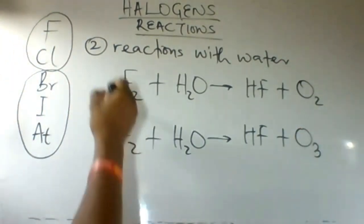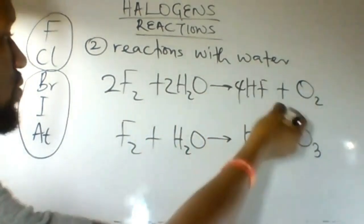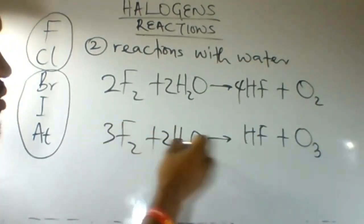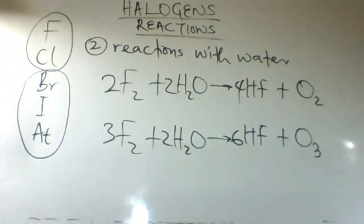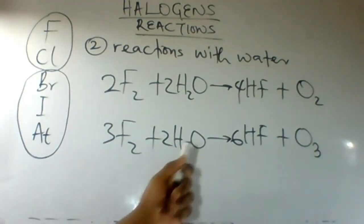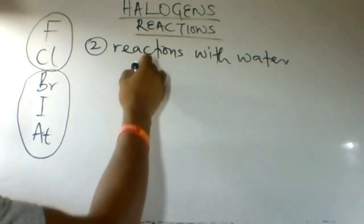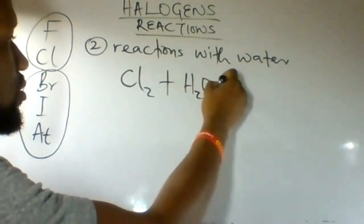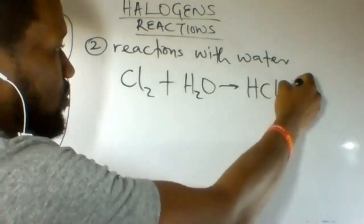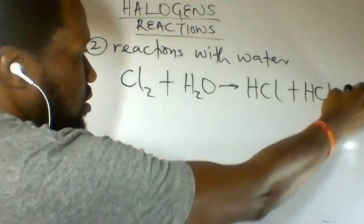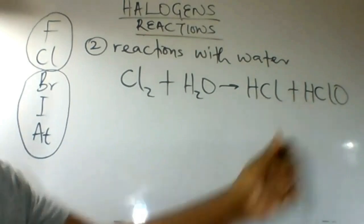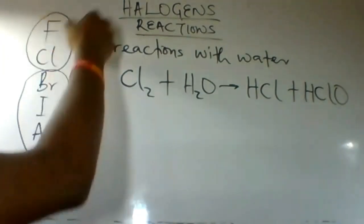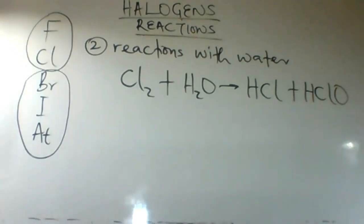If we balance the fluorine-water reaction forming ozone, we get coefficients 2, 2, and 4 for one form, or 3, 2, and 6 for the ozone form. When fluorine combines with water it forms oxygen and ozone. Chlorine can do the same — chlorine combines with water because it has a larger reduction potential compared with oxygen, forming HCl and HClO, that is hydrochloric acid and oxochloric acid. So the first two halogens, the most reactive ones, can react with water to form products.